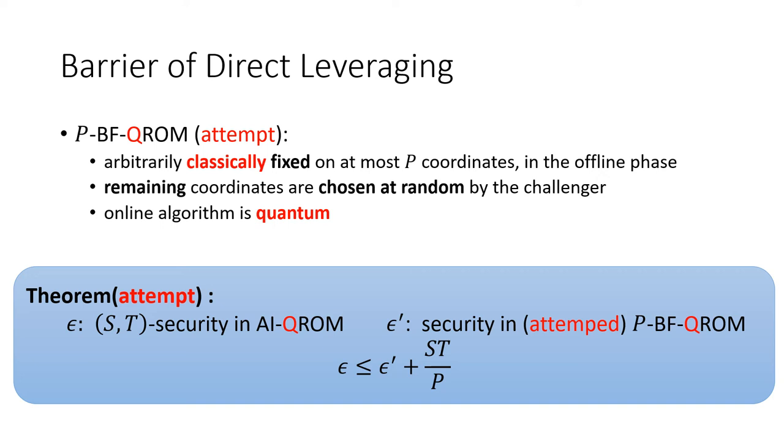With this proposed definition, we want to prove the following theorem, which we call a direct leveraging of the classical pre-sampling theorem. The theorem says the advantage in the AIQROM is bounded by the advantage in the PBFQROM, plus an additive term, which is st over p.